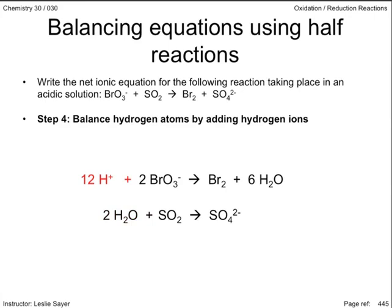Step four, balance hydrogen atoms by adding hydrogen ions. For the upper equation, the 12 hydrogen atoms belonging to the water on the product side are balanced by adding 12 hydrogen ions on the reactant side. And similarly, the four hydrogen atoms of the lower equation are also balanced with hydrogen ions.